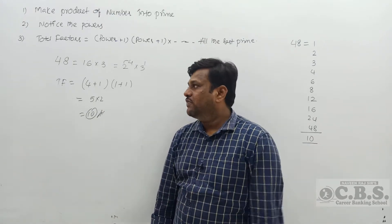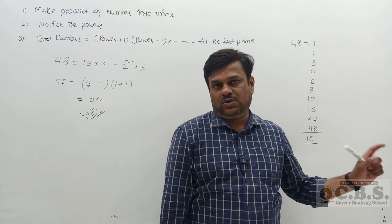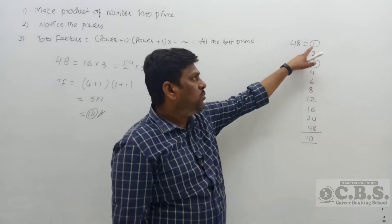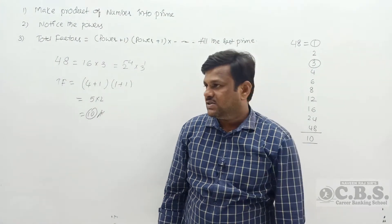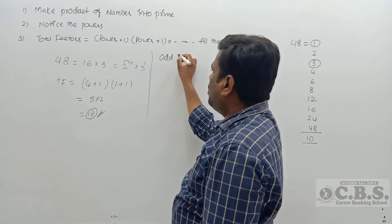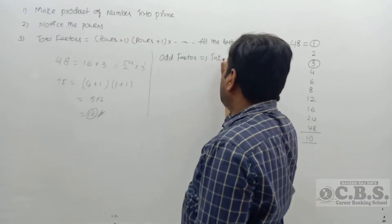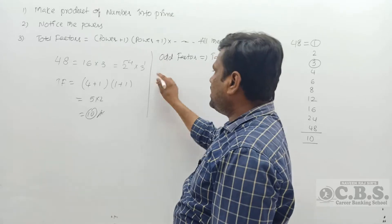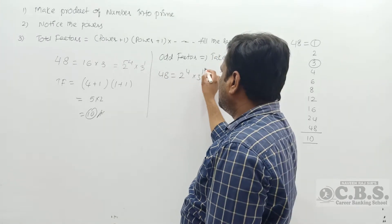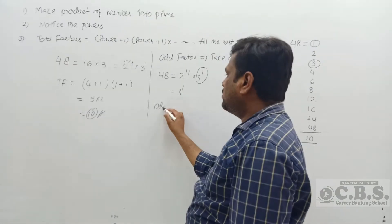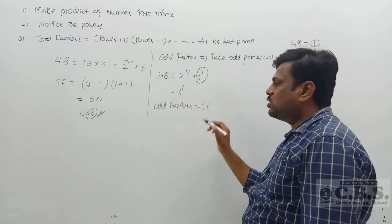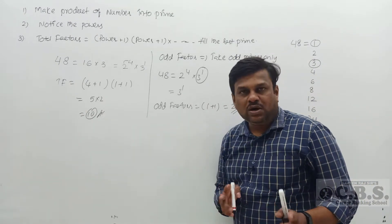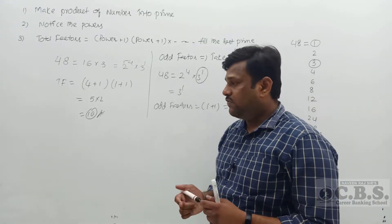Next, find the total odd factors of 48. 1 is an odd number and 3 is an odd number, so there are only 2 odd factors. The method: for odd factors, take odd primes only. In 48 = 2⁴ × 3¹, the only odd prime is 3. So odd factors = (1+1) = 2. Therefore 48 contains only 2 odd factors.